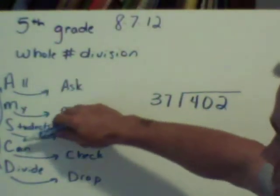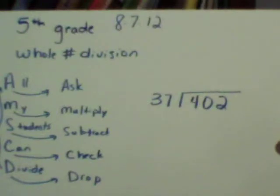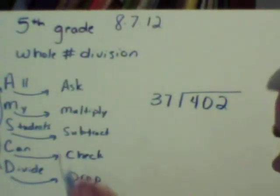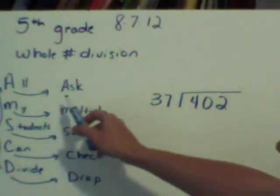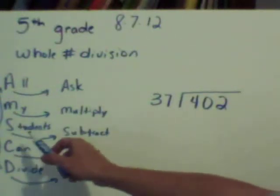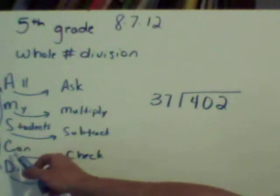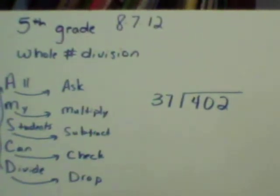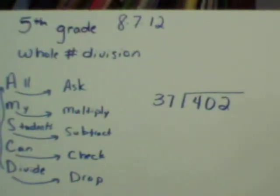You just remember all my students can divide. We're going to transfer the first letter of each word into a task that you're going to do every time you divide. So the A for all stands for ask. The M in my stands for multiply. The S in students stands for subtract. The C is for check, which is a very important step that sometimes we forget. The D is for drop. And the arrow just points to go all the way back up. Once you've done those steps, until you complete the problem.